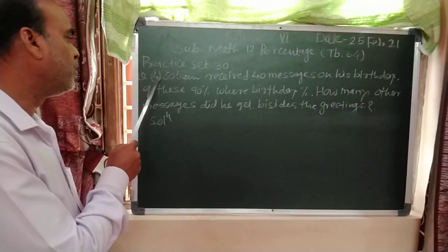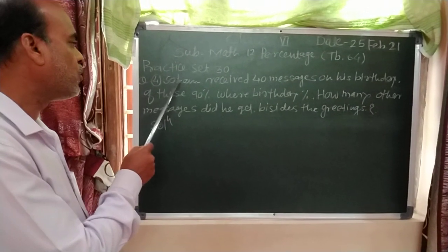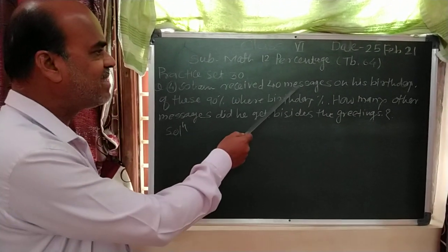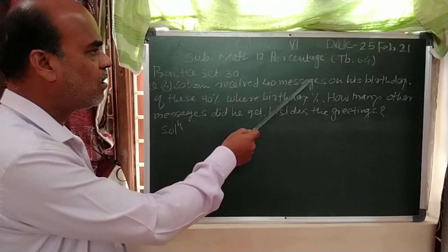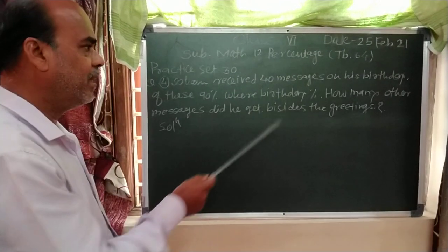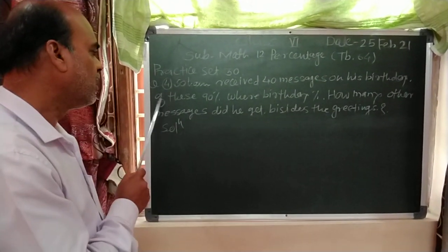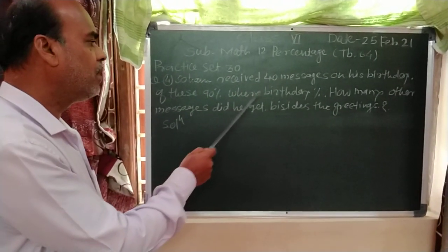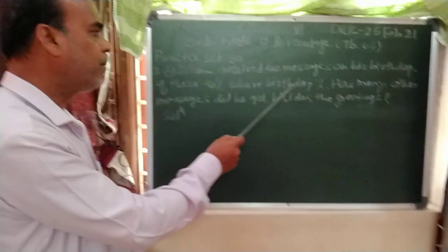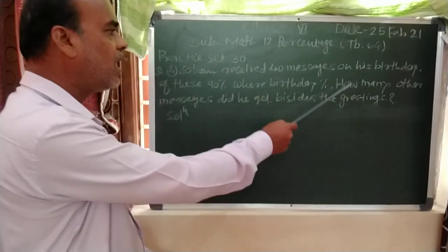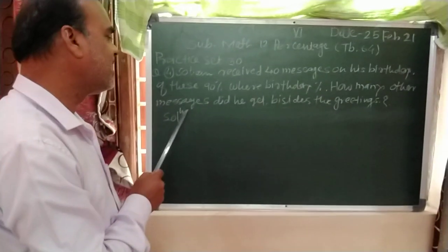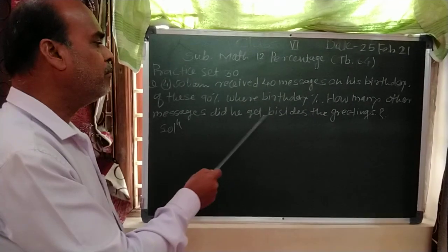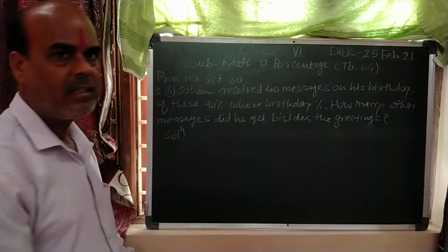Example number 4. Soham received 40 messages on his birthday. Of these, 90% were birthday greetings. How many other messages did he get beside the greeting?